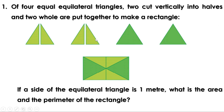There are four equal equilateral triangles. Two triangles are placed here, and the other two are cut into halves and placed like this. These triangles are arranged to form a rectangle. We have to find the area and the perimeter of this rectangle.